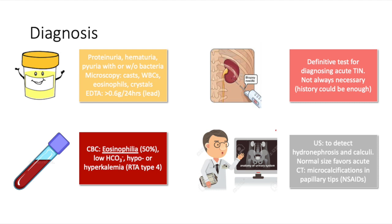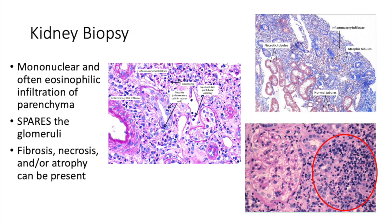The CBC will show eosinophilia about half of the time. It can also show low bicarbonate associated with metabolic acidosis, and hypo- or hyperkalemia usually dependent on the inciting agent. Kidney biopsy is the definitive test for diagnosing acute TIN, though it is not always necessary as history can be sufficient. Imaging studies can help distinguish between acute and chronic TIN and determine the degree of kidney damage. Ultrasound can detect hydronephrosis and calculi — normal kidney size favors acute TIN, whereas shrunken kidneys point towards chronic. On CT scan, you can observe microcalcification in papillary tips, usually associated with NSAIDs. Kidney biopsy will most certainly show mononuclear infiltrates, often with eosinophils in the parenchyma, always sparing the glomeruli, with possible fibrosis, necrosis, or atrophy in severe or chronic cases.